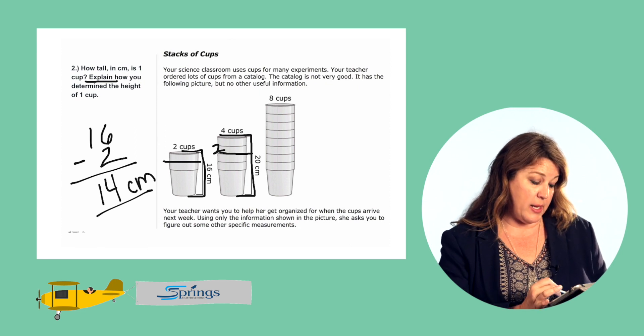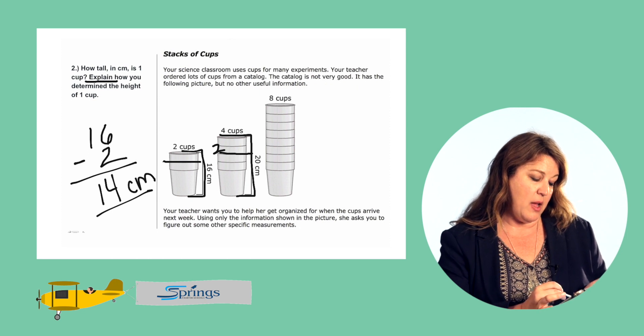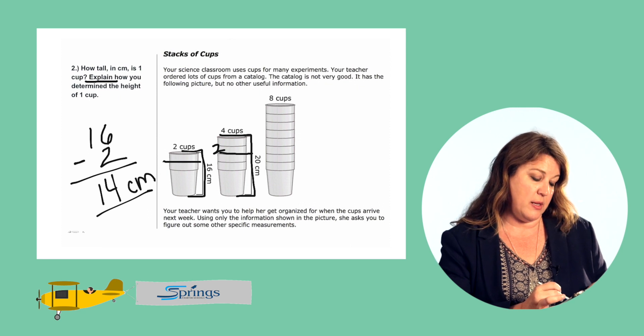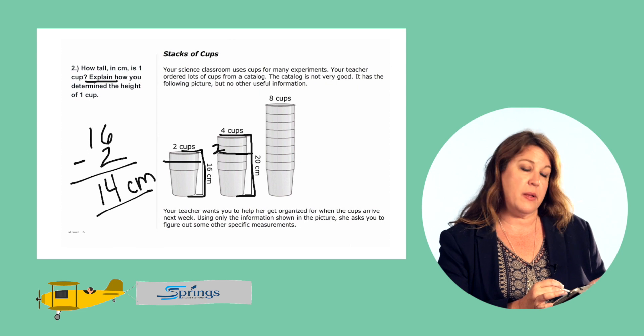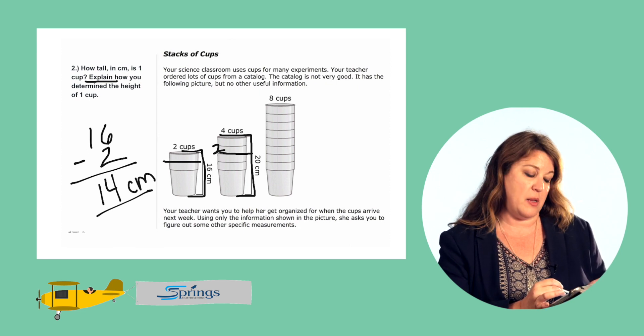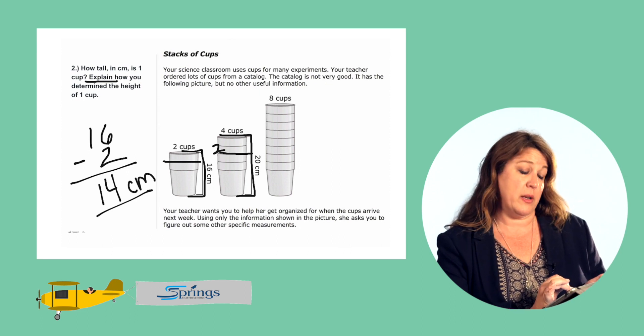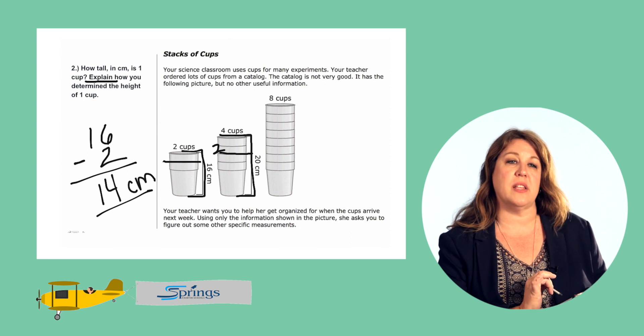We can explain it by saying we know that the height of two cups is equal to 16. The height of four cups is equal to 20. That is a difference of four so we know that each lip of the cup is equal to two centimeters. So if two cups is equal to 16 centimeters we subtract the lip for one cup. That's two. 16 minus 2 is equal to 14 centimeters, the height of one cup. That's all we need to do to solve problem number two.